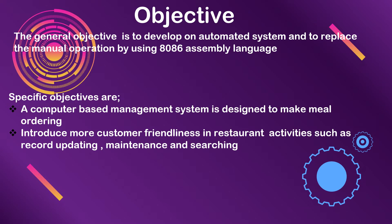Objective. The general objective is to develop an automated system and to replace the manual operation by using 8086 assembly language. Its specific objectives are: a computer-based management system is designed to make meal ordering; the second is to introduce more customer friendliness in restaurant activities such as record updating, maintenance, and searching.